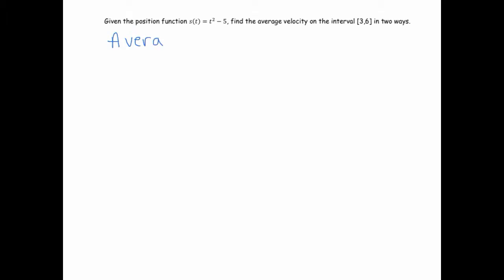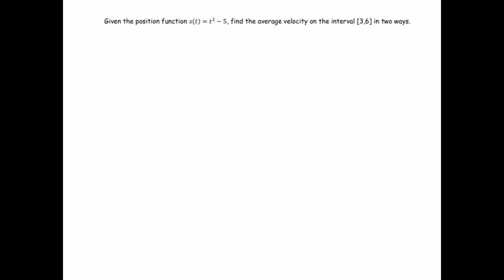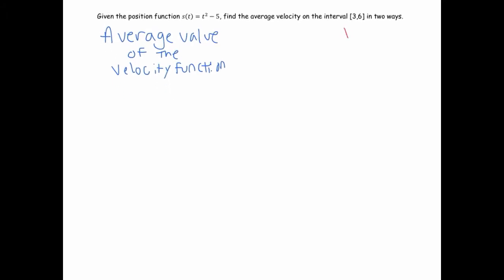The first way is we're going to view this problem as finding the average velocity — that's the average value of the velocity function. I don't see my velocity function here, but we can just take the derivative of the position function and find it quickly. Notice that the velocity function is just 2t. The other way is to think of average velocity as the average rate of change of your position function.